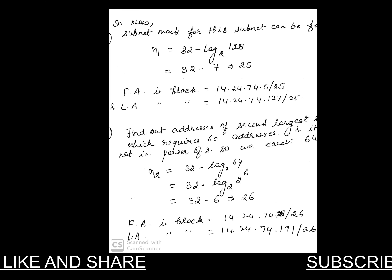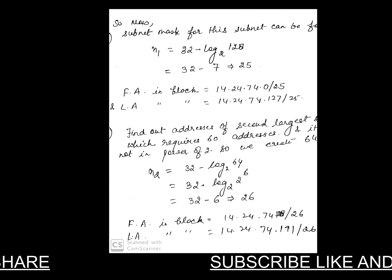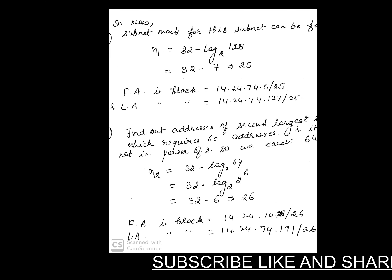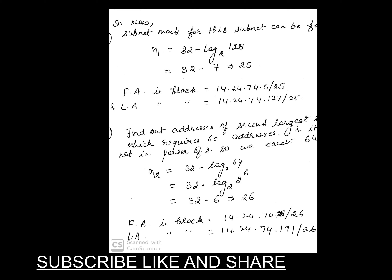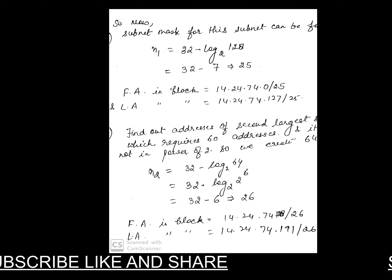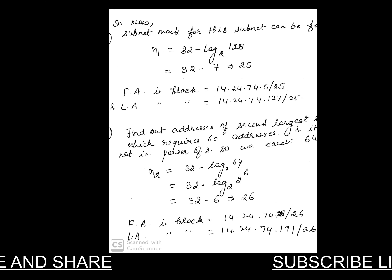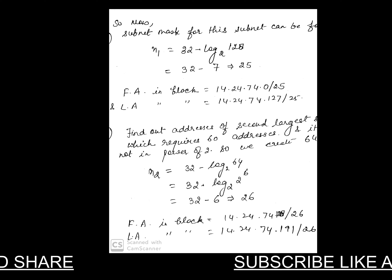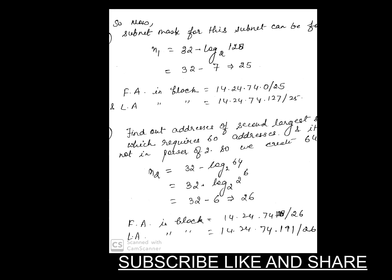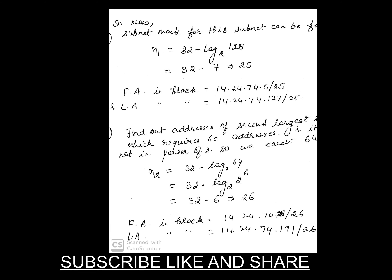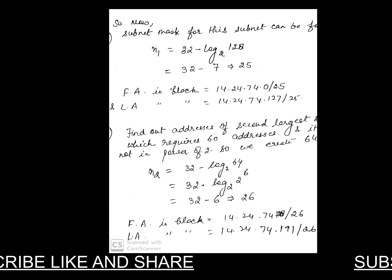Apply the formula: n = 32 - log₂(128). This is the formula for block allocation in ISP addresses — learn it well. Since 128 = 2^7, log₂(128) = 7. Therefore, 32 - 7 = 25. So n = 25 is the prefix length allocated for the first subnet.